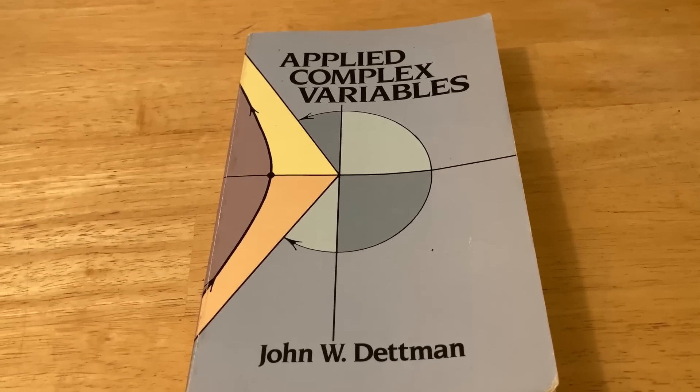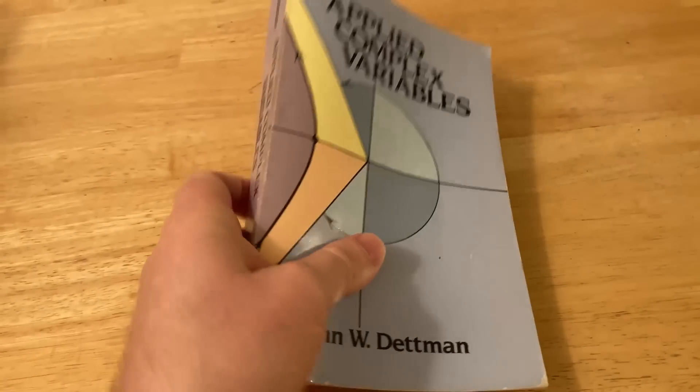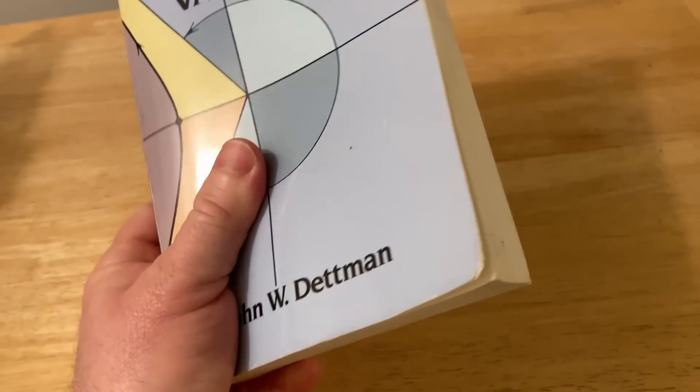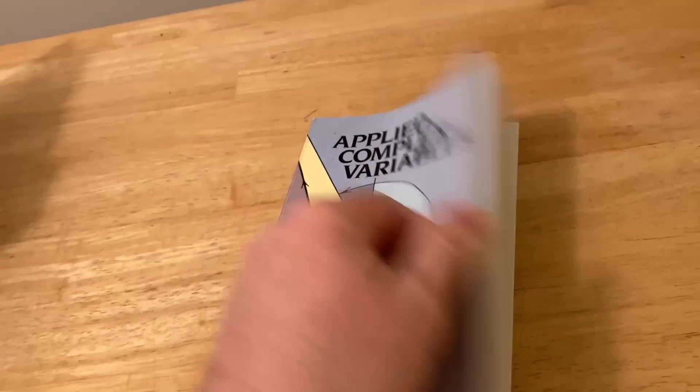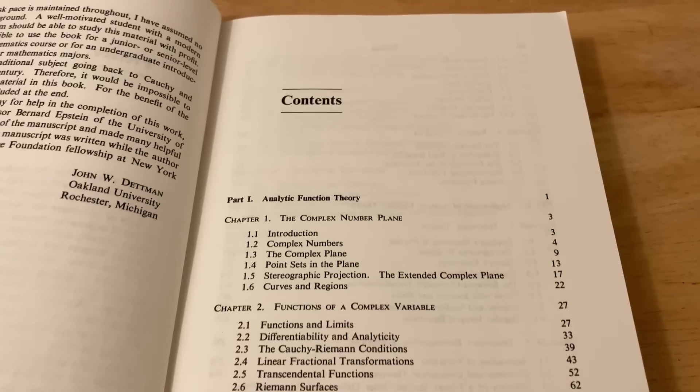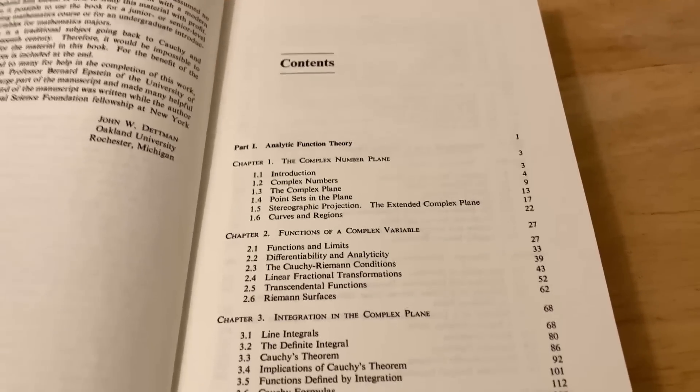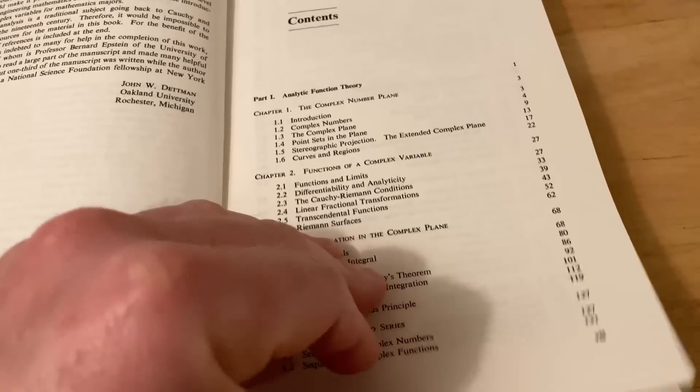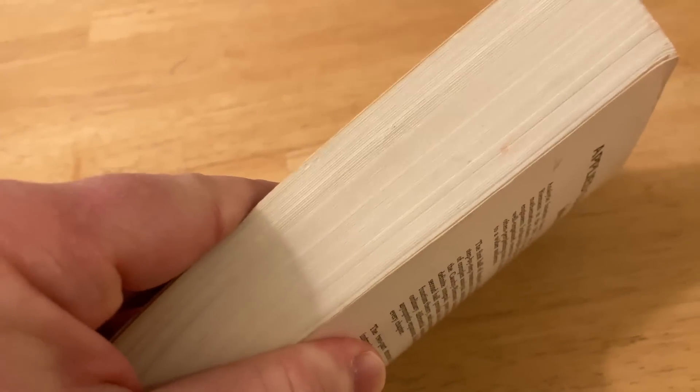The first book is called Applied Complex Variables by John W. Detman. I want to make a comment about Dover books and that's the size. This is a really good size for a book, so you can carry it around with you and read it anywhere. This book has everything you will learn in a complex variables course and more. By the way, I say little book but this book is actually pretty thick.